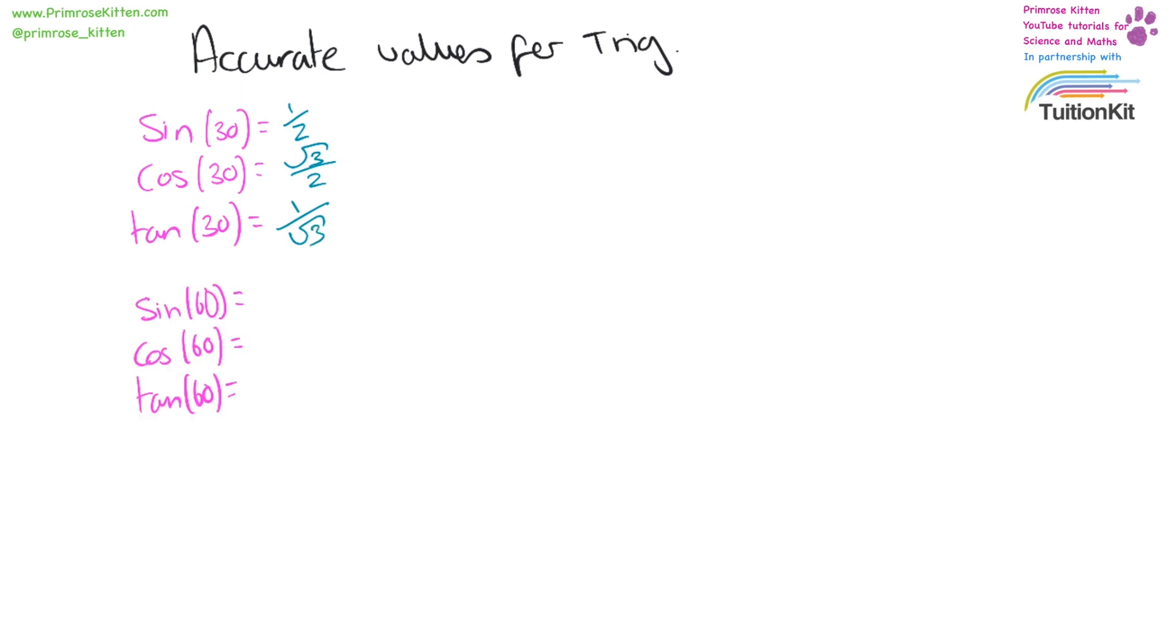Sine 60 equals square root of three over two, cos 60 is a half, and tan 60 is square root of three.